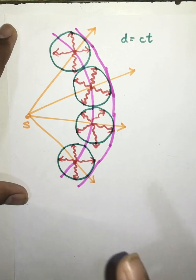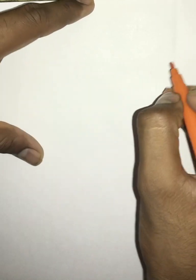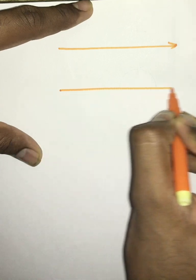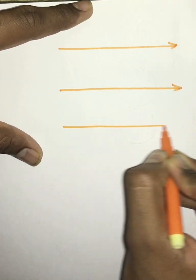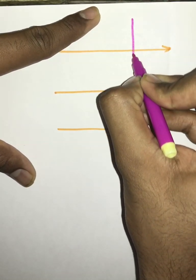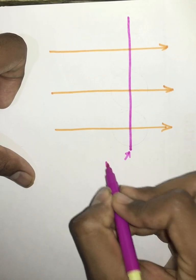The same procedure we have to do for the plane wavefront. The difference is that in the spherical wavefront, light was travelling from a point source and the wavefront we got was in a curved shape. Now in the plane wavefront, light is travelling in a parallel direction from all the sources. Since the source of light is kept at a finite distance, we get parallel beams of light. From this source of light we get one wavefront, which is called the primary wavefront.